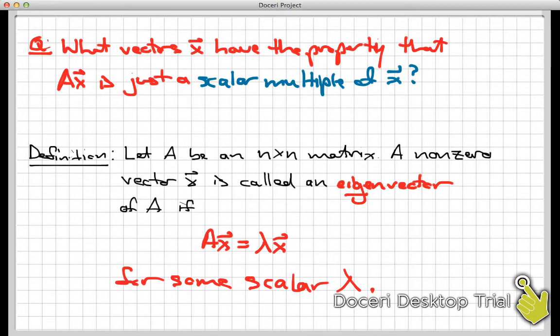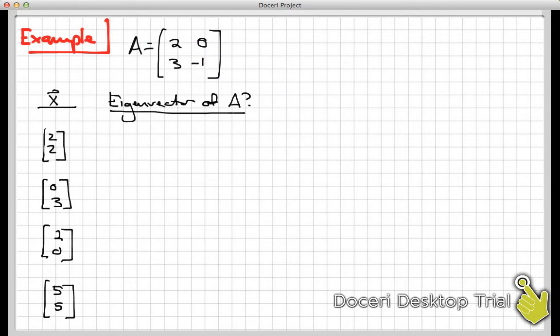So let's finish the definition. A is an n by n matrix. A nonzero vector x is called an eigenvector for A if A times x equals lambda x for some, importantly here, scalar lambda. So in other words, multiplying that vector by a matrix results in just simply multiplying it by a scalar.